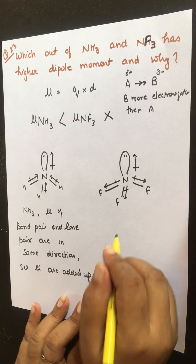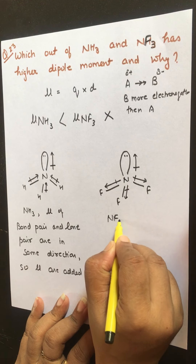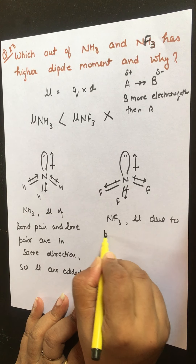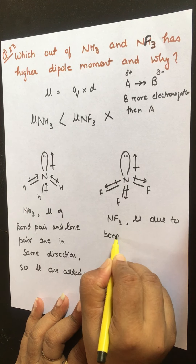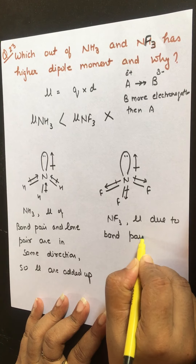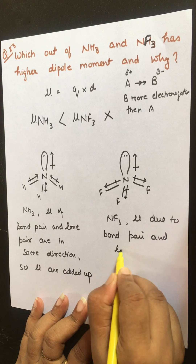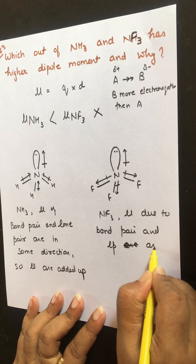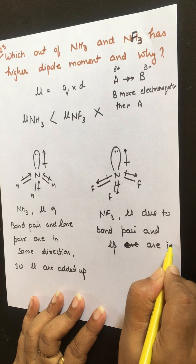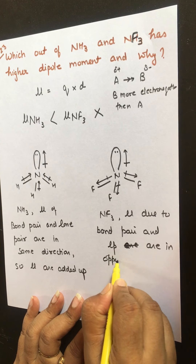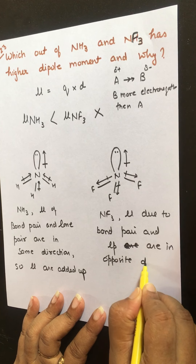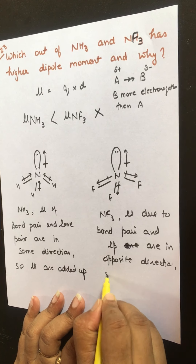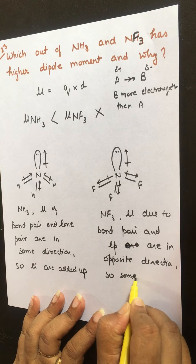But in the case of NF₃, the dipole due to the bond pair and the dipole due to the lone pair are in opposite directions. So the sum of the dipoles will cancel out.